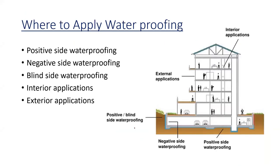In this figure you can also see positive side waterproofing — this is the soil, this is the structure, and water is coming at this level toward the structure. So we apply the waterproofing at the first stage, on the side where water pressure acts.